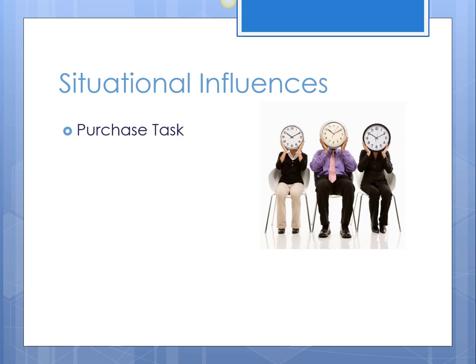For instance, if you are buying something for yourself, you will be influenced by certain things as opposed to buying something for a family member's birthday present. You will be influenced by other things because of the reason behind the purchase. Secondly, we have our social surroundings. The social group that you might be with will have some sort of influence, generally speaking, on what you purchase. A lot of consumers report that if they are with friends or family members, they spend more money than if they're shopping by themselves.